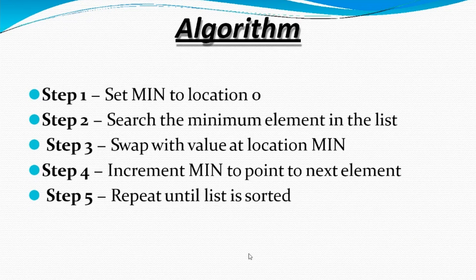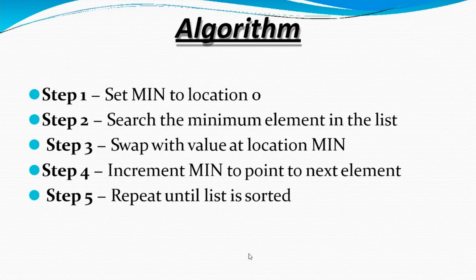These are the steps for implementing the algorithm in code. Step one: set the minimum location to zero. Step two: search for the minimum element in the array. Step three: swap the minimum element with the element at the min location. Step four: increment the value of min to the next element. We repeat these steps until the list is completely sorted.